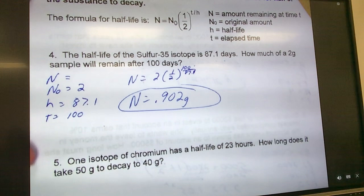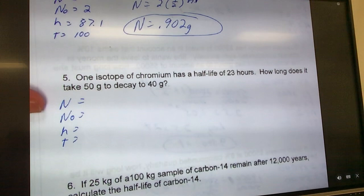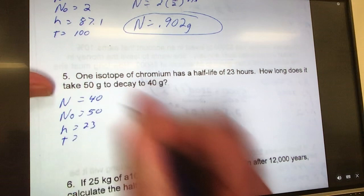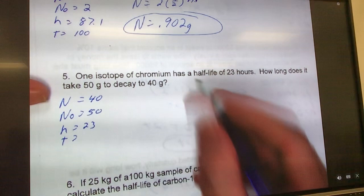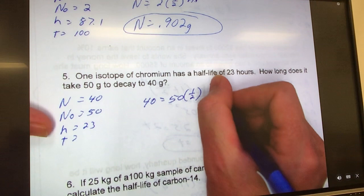Number five: N, N₀, H, and T. So one isotope of chromium has a half-life of 23 hours. How long does it take a 50-gram, so it starts off at 50, to decay to 40, so our final amount 40. So we now know since the top two were given, we're going to have to have a log out of it, no big deal. So we put in our formula: N is 40 equals 50, parentheses, one-half, raised to the T which we don't know, divided by H, which is 23.